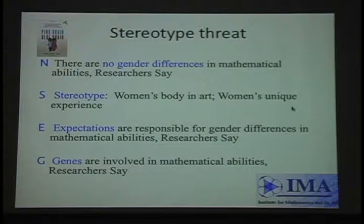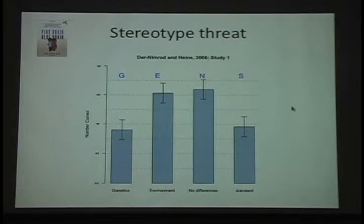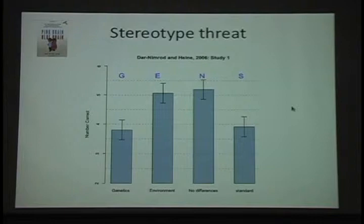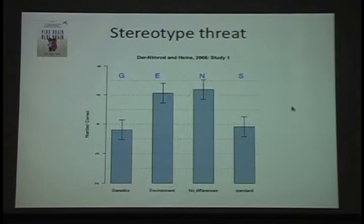There were 132 participants. The group that read about a genetic reason why women aren't as good at math, and the group told it's because of how they're taught in school — each person is compared to themselves because they had two math scores. The groups that were primed to think about genetics, and surprisingly the group primed to think about women in art, both didn't do nearly as well on the second test as the other groups.